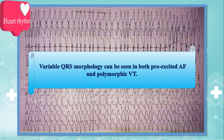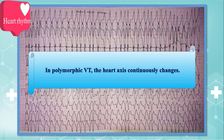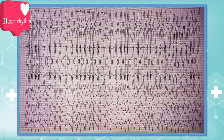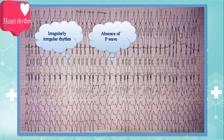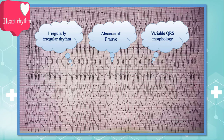Variable QRS morphology can be seen in both pre-excited AF and polymorphic ventricular tachycardia, so pre-excited AF may be mistaken for polymorphic ventricular tachycardia. Note that in polymorphic ventricular tachycardia, the heart axis continuously changes. But in this strip, the heart axis is deviated leftwards and is stable. In summary, irregularly irregular rhythm, absence of P waves, and variable QRS complex morphology establish atrial fibrillation with accessory pathway — or pre-excited AF — as the underlying heart rhythm.